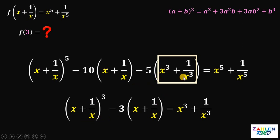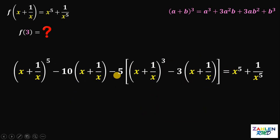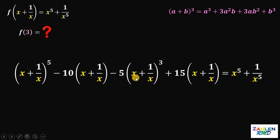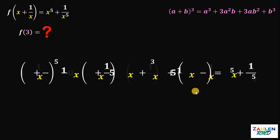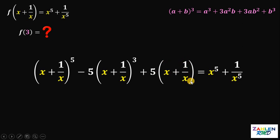Therefore, we can replace x^3 + 1/x^3 with (x + 1/x)^3 minus 3(x + 1/x). Distributing the 5 inside the bracket gives negative 5(x + 1/x)^3 plus 15(x + 1/x). Notice we have a common term: negative 10(x + 1/x) and positive 15(x + 1/x). Combining them gives 5(x + 1/x). We have now rewritten x^5 + 1/x^5 in terms of (x + 1/x).